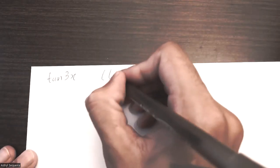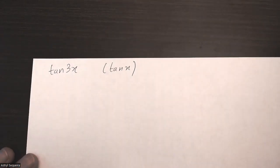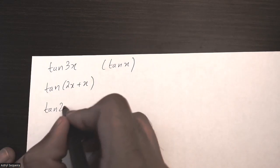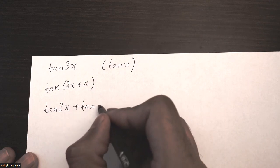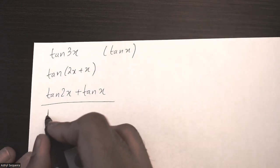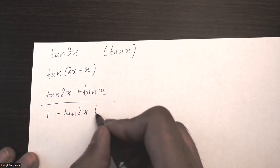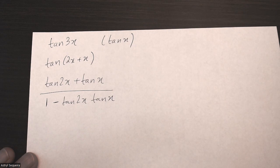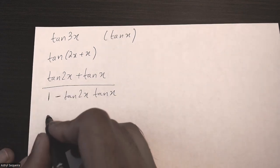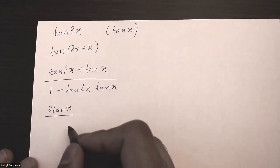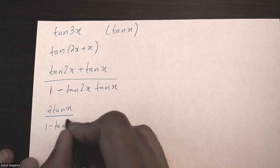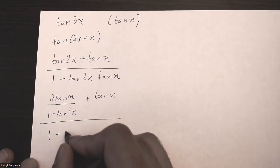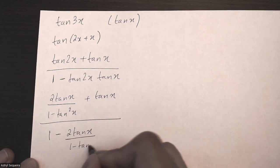We have tan 3x and we want to represent this in terms of tan x. Similar idea — we're breaking this into tan of 2x plus x, which is simply tan 2x plus tan x divided by 1 minus tan 2x times tan x. Then we want to simplify tan 2x. Using the double angle formula, tan 2x can be replaced with 2 tan x over 1 minus tan squared x. I'm going to do that on the bottom here as well.